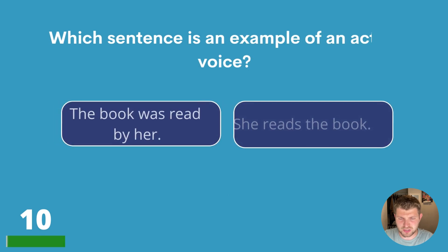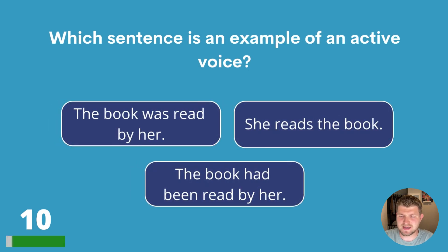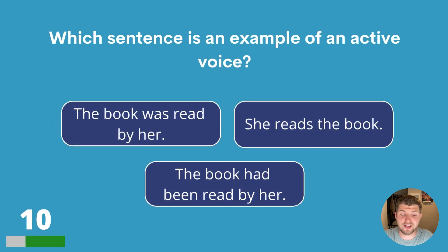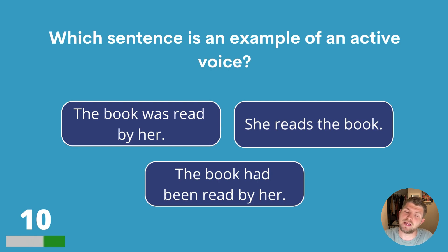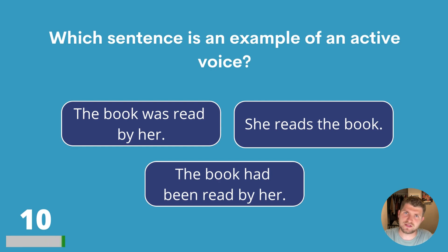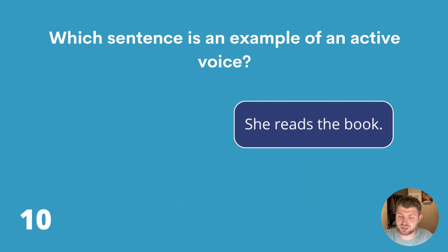Question ten. Which sentence is an example of an active voice? The book was read by her, she reads the book, or the book had been read by her? The answer is she reads the book.